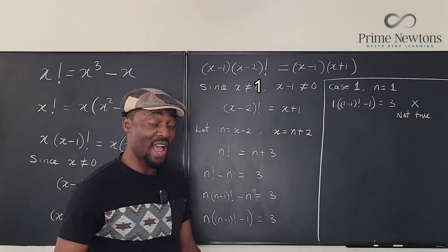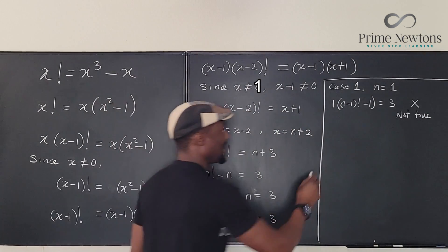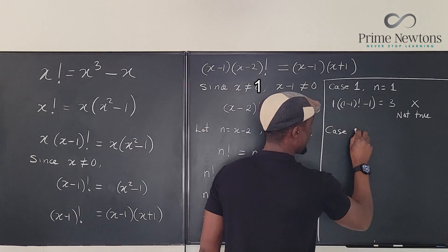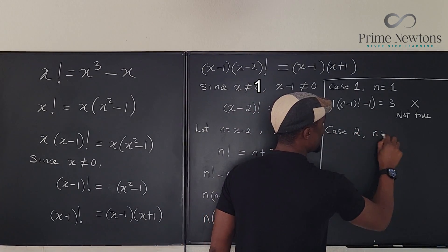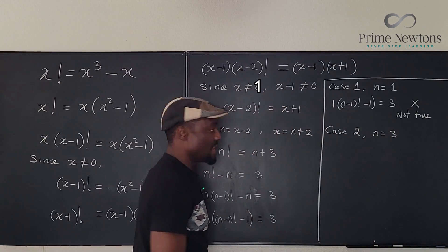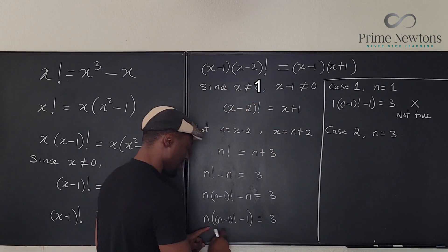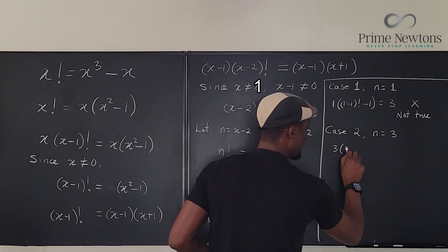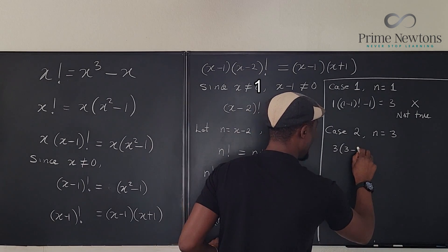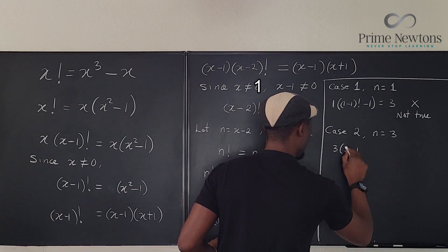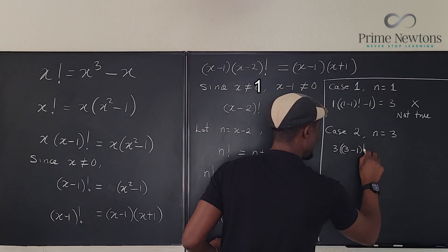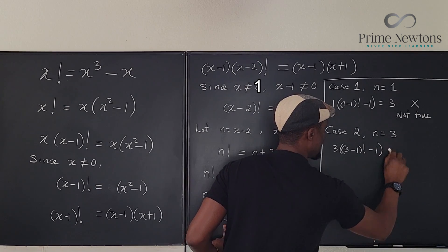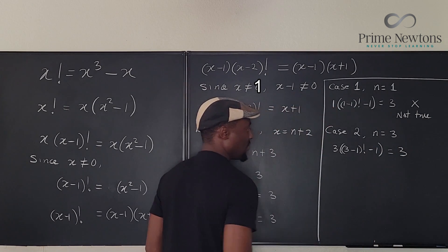So the other option we have is if n equals 3. Case 2. n equals 3. Then we can say from here, this is going to be 3 into 3 minus 1 factorial minus 1 equals 3. Let's see if this is equal to 3.